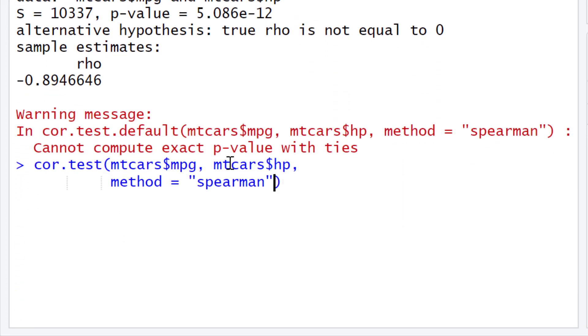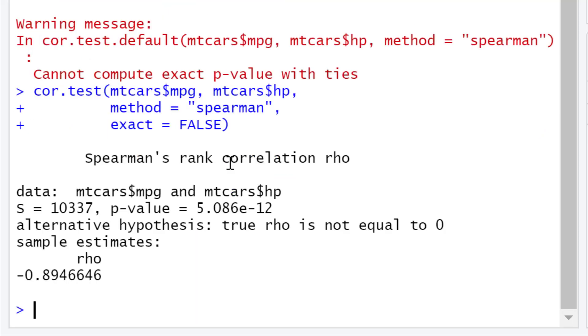If you want to remove this warning message, you can simply add in the exact argument. If I re-run the test, but add in the argument exact equals false, and then press the Enter key, you'll notice now that the warning message has been removed.